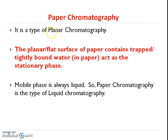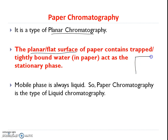Paper chromatography is a type of planar chromatography. The planar, that is flat surface of paper, contains trapped or tightly bound water in paper which acts as a stationary phase. The bound water in paper acts as the stationary phase.